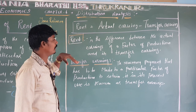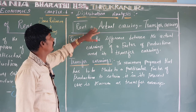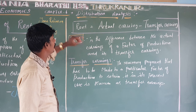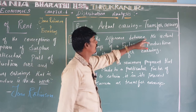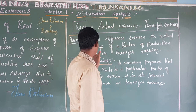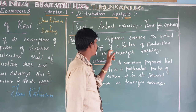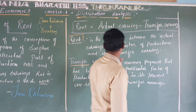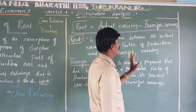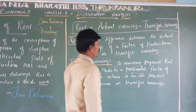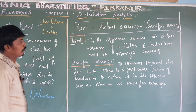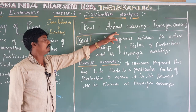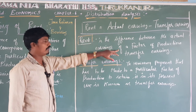Modern rent is the difference between the actual earnings of a factor of production and its transfer earnings. The formula remains the same: Rent = Actual Earnings − Transfer Earnings.